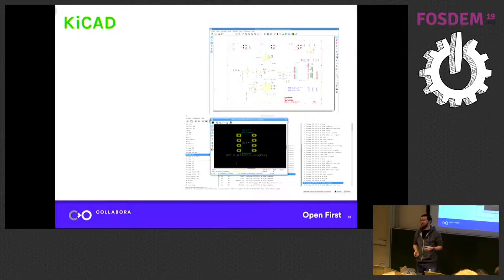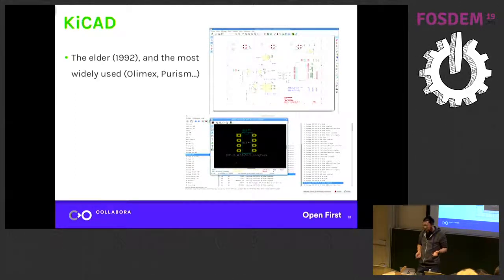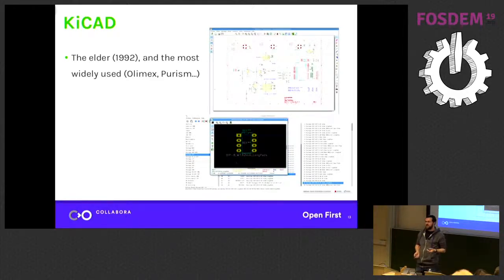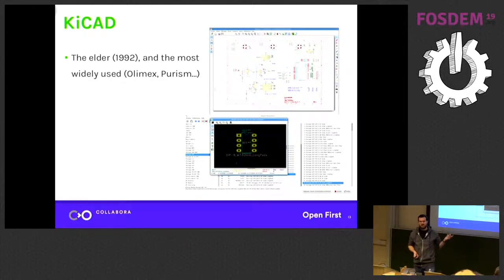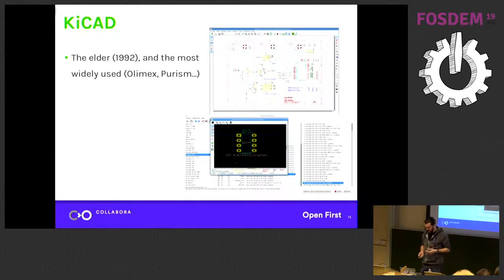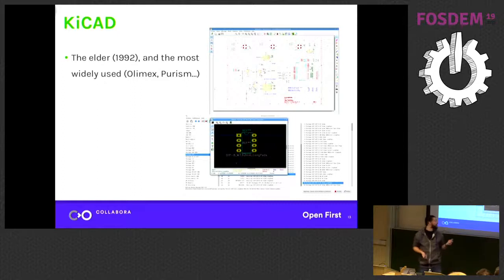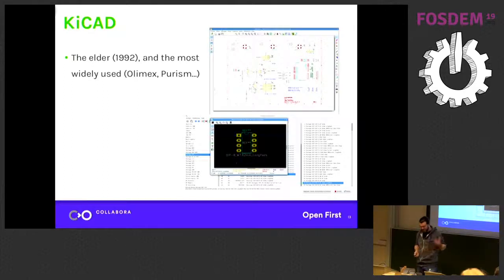You might rather use KiCAD. This is the elder — it started in 1992, so a really old piece of software even by today's standards. It's the most widely used open-source EDA tool in the industry right now. Olimex is an obvious big user of KiCAD. And Purism, which is currently designing a smartphone running Linux, has designed their dev boards using KiCAD and intends to make them public and open source — which is another big industry use case.